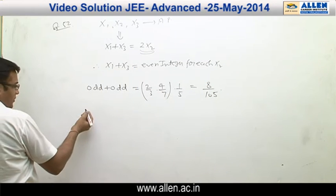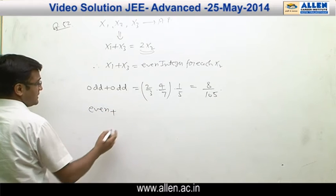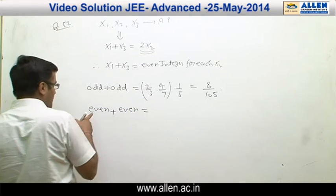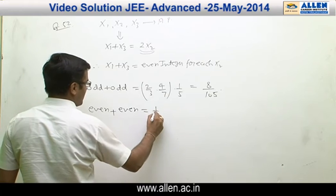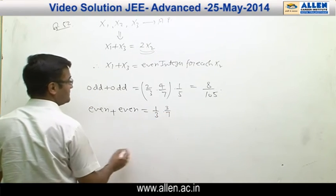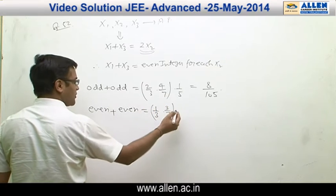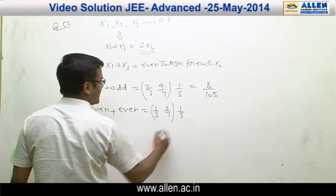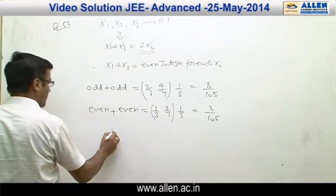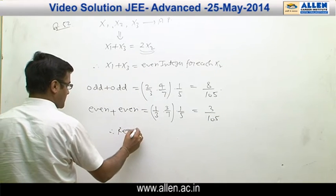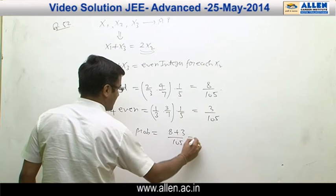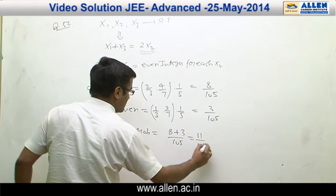The second case: when we take an even number from box B1 and even number from box B3. Even number from box B1 — probability is 1/3. Even number from box B3 — probability is 3/7. And we take any number from box B2 — probability is 1/5. Therefore, this probability becomes 3/105. Therefore, the required probability is the sum of these 2 cases: 8 + 3 upon 105, that is 11/105.